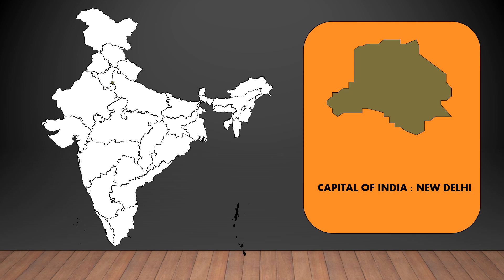The capital of India is New Delhi. You can see the location of New Delhi on the screen — it's situated between UP and a small part visible on the map. That is New Delhi, the capital of India. I'm also going to show each state's location on the map in this video.